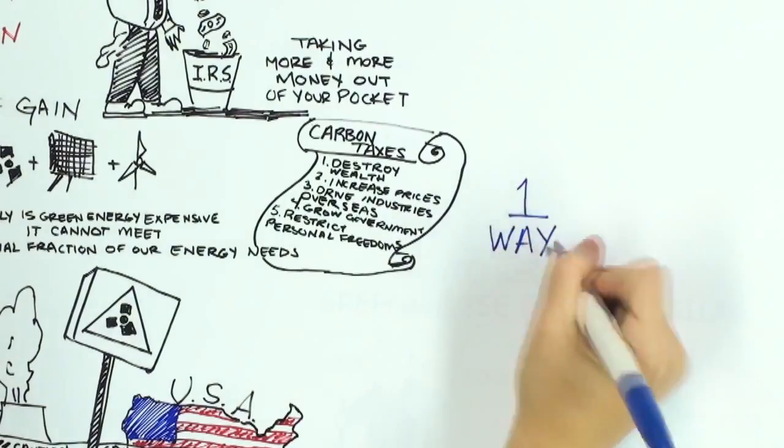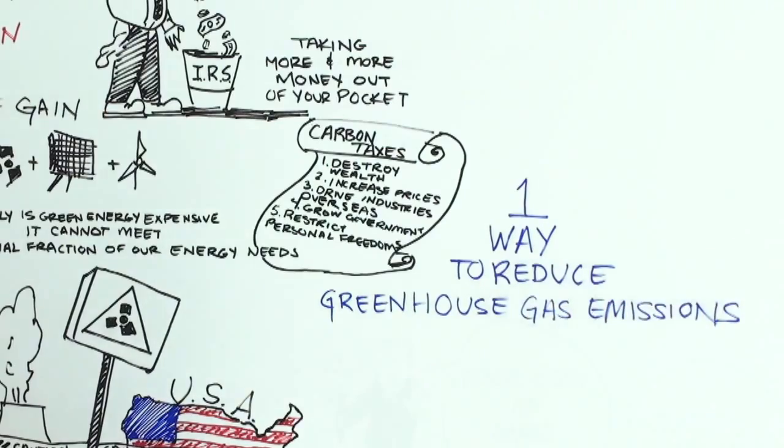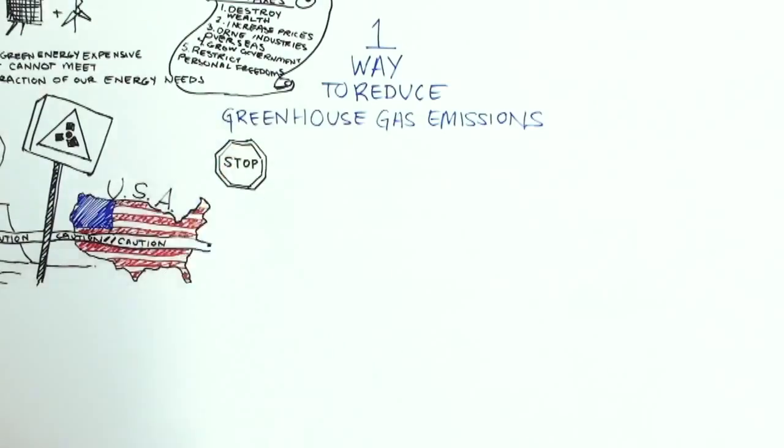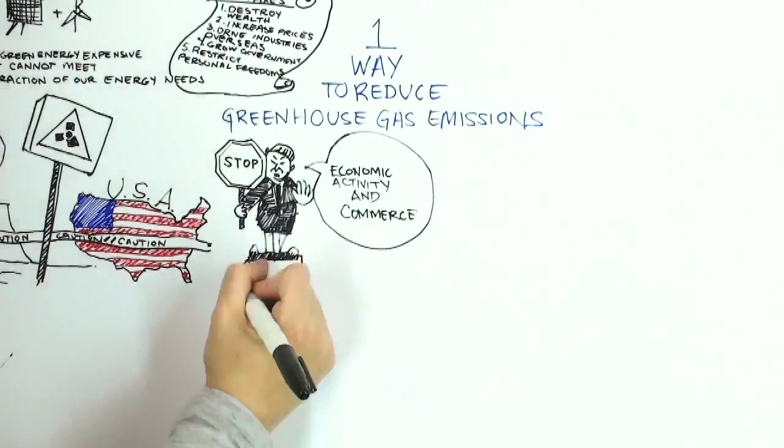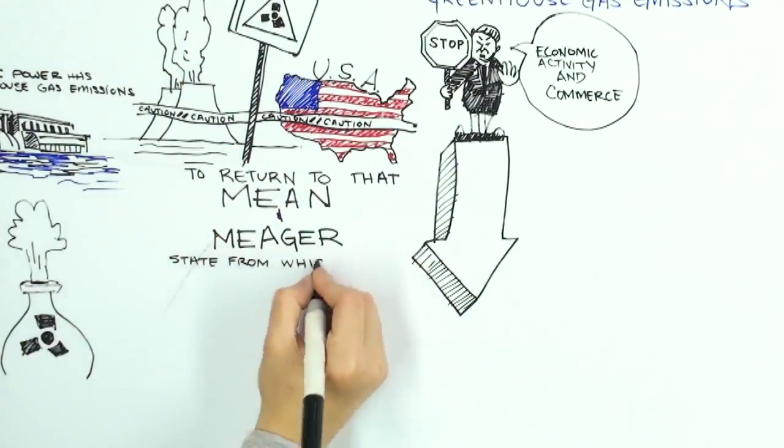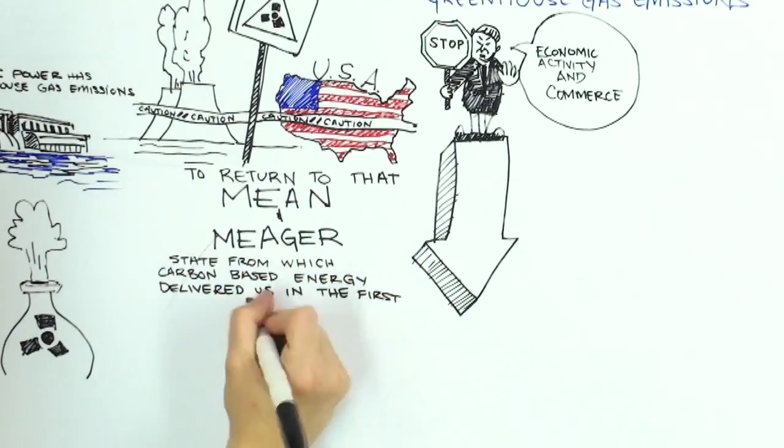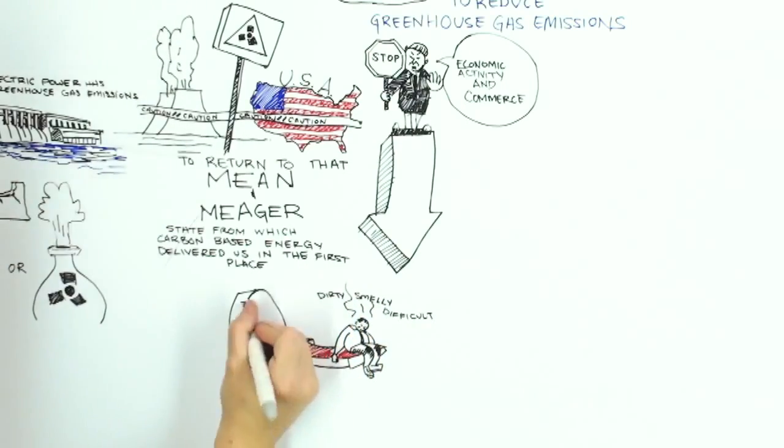Which leaves us with only one immediate and effective way to reduce greenhouse gas emissions: to simply cease all economic activity, all commerce in the world. To return to that mean and meager state from which carbon-based energy delivered us in the first place. Dirty, smelly, difficult, and short lives.